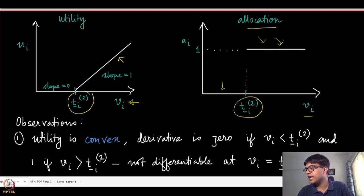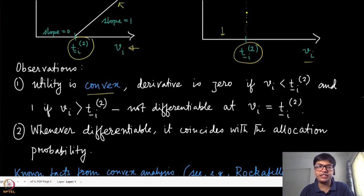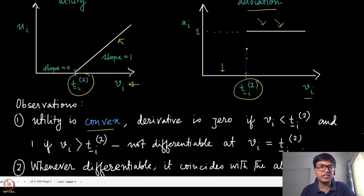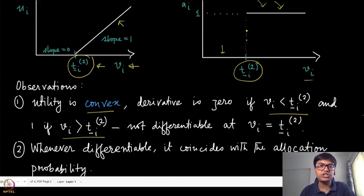At the exact point of equality, there may be at least one other agent with the same valuation, so one can randomly pick any of these agents as winners, making any allocation in [0,1] valid at that point. A few observations follow from these two curves: the utility curve is convex, its derivative is zero when v_i ≤ t_{-i}^{(2)}, one when v_i is above that threshold, and non-differentiable at t_{-i}^{(2)}. Whenever the function is differentiable, the derivative coincides with the allocation.